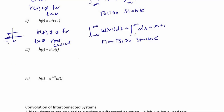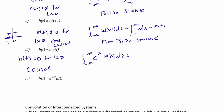Let's look at two more examples. h(t) equals e^t times u(t). Since it's multiplied by u(t), h(t) equals zero for t less than zero, so this system is causal. However, the integral from negative infinity to positive infinity of e^lambda times u(lambda) d-lambda equals the integral from 0 to infinity of e^lambda d-lambda, which equals infinity. So it's not finite, and this system is not BIBO stable.